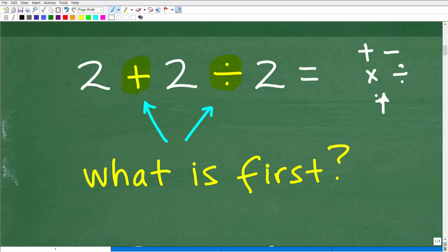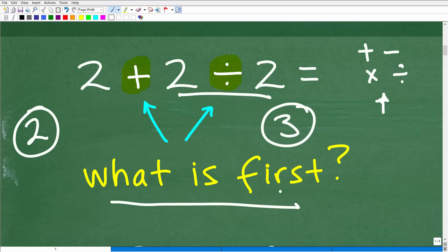And the main question in this problem, the reason why people either got this problem correct or they got this problem wrong is it all depends upon which one of these operations did you do first? Did you go 2 plus 2 first? Because if that was the case, you went 2 plus 2, that's 4. And then you took that 4 and divided it by 2, that would have given you an answer of 2. But if you went 2 divided by 2, well, 2 divided by 2 is 1. So 1 plus 2, that would have given you an answer of 3. So it all depends. What do we do first?